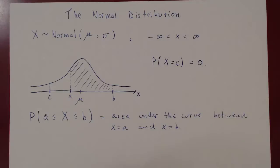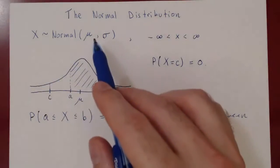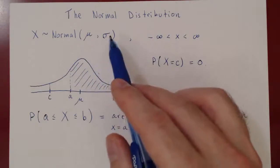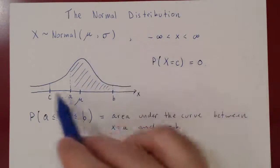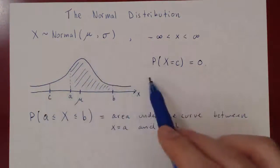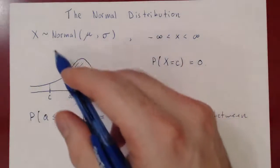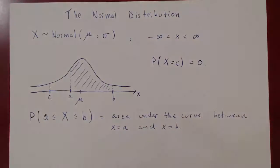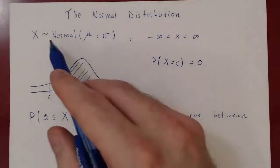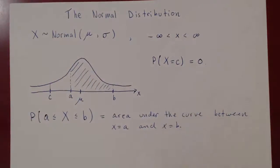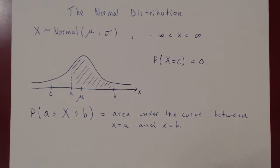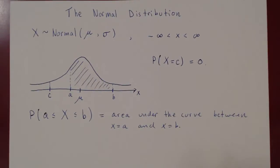The problem is that as the mean changes and the deviation changes, you'll have a different curve, a different distribution curve. The question is, can we somehow find one single example of the normal distribution that relates to all of the others? The answer is yes — it is called the standard normal distribution.